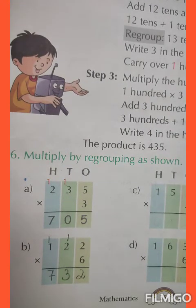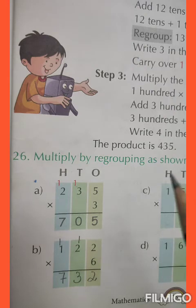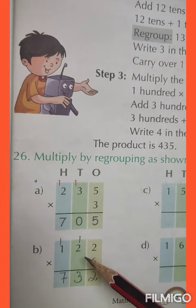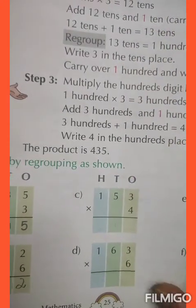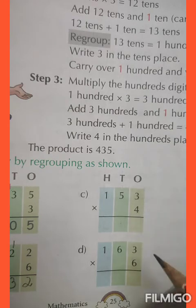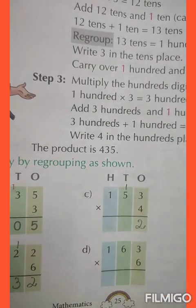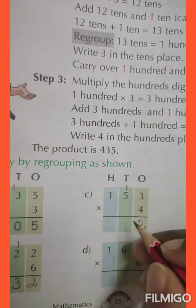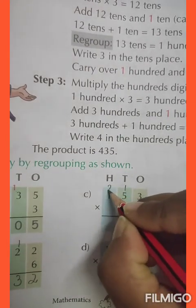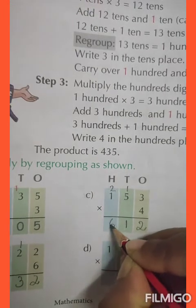Now students, if you look at question number 26, what is the difference you find? Previously in question number 25, you did multiplication by regrouping — that means you carried over only once. But here in question 26, you have to carry 2 times. Now question number C: 153 into 4. 4 threes are 12, write 2 and 1 is carried over. 4 fives are 20, 20 plus 1 is 21, write 1 and 2 is carried over. 4 ones are 4, 4 plus 2 is 6. Answer is 612.